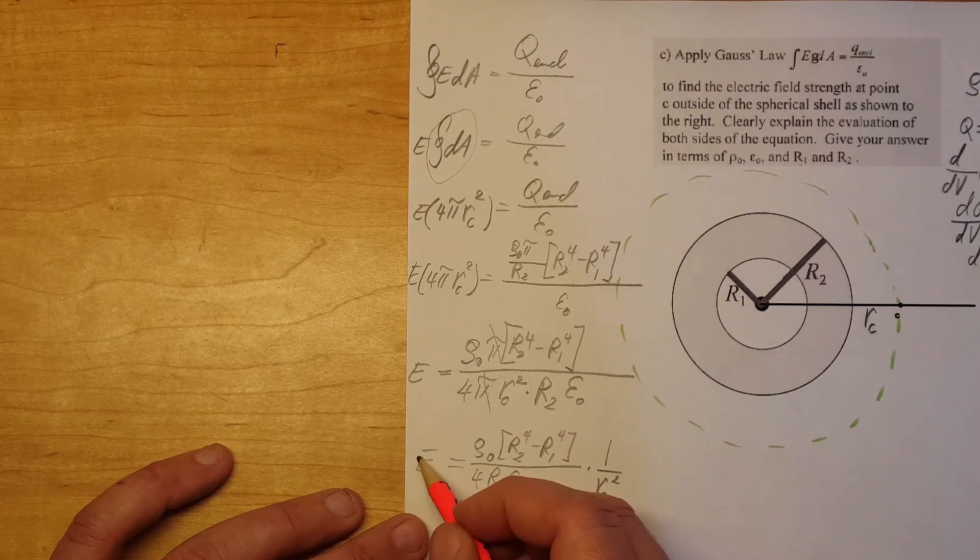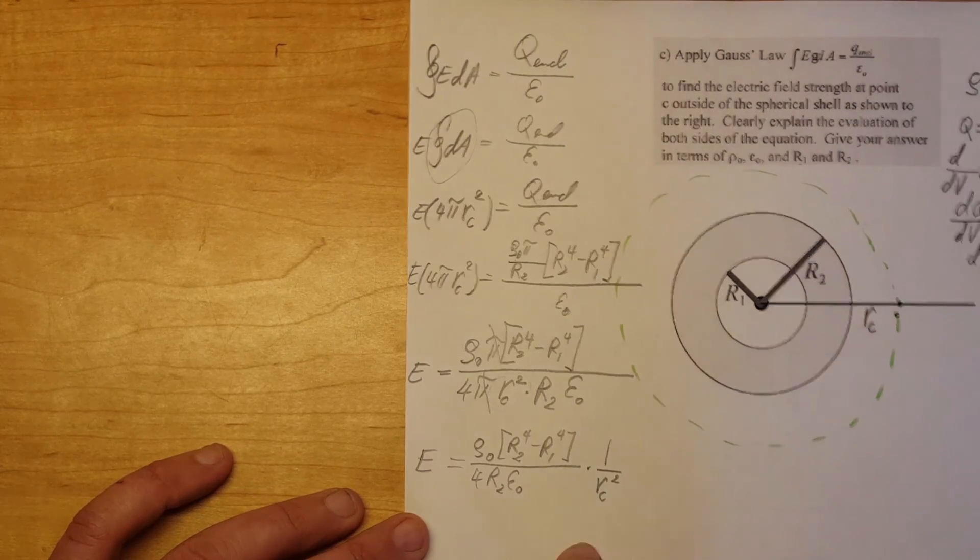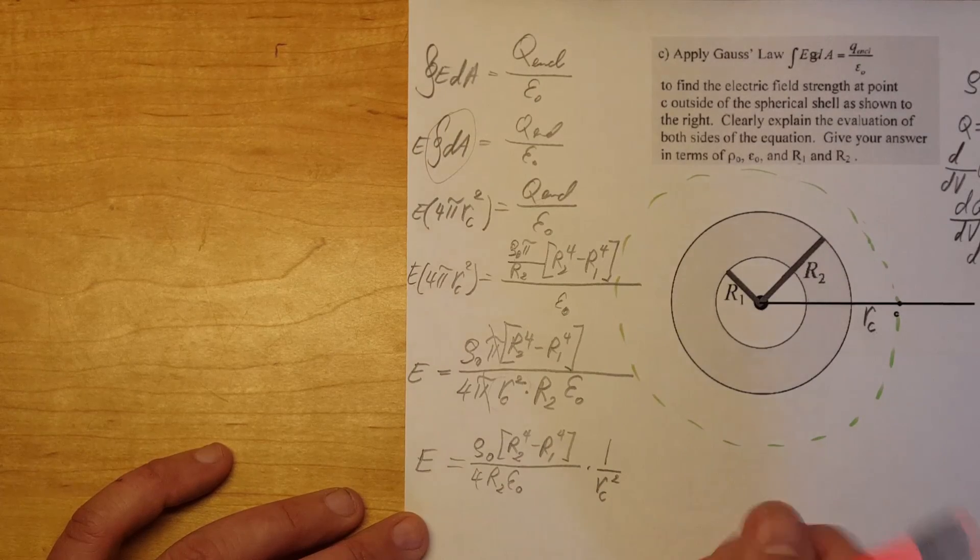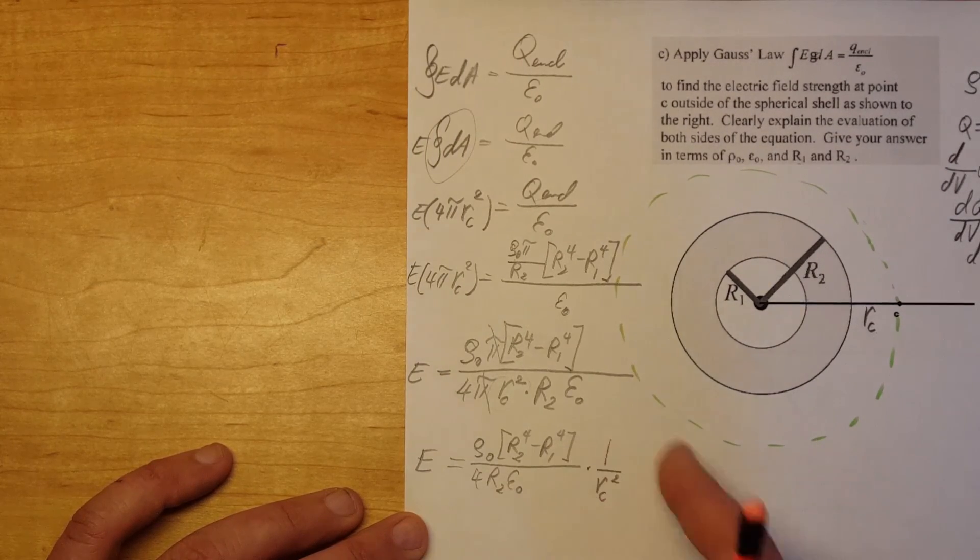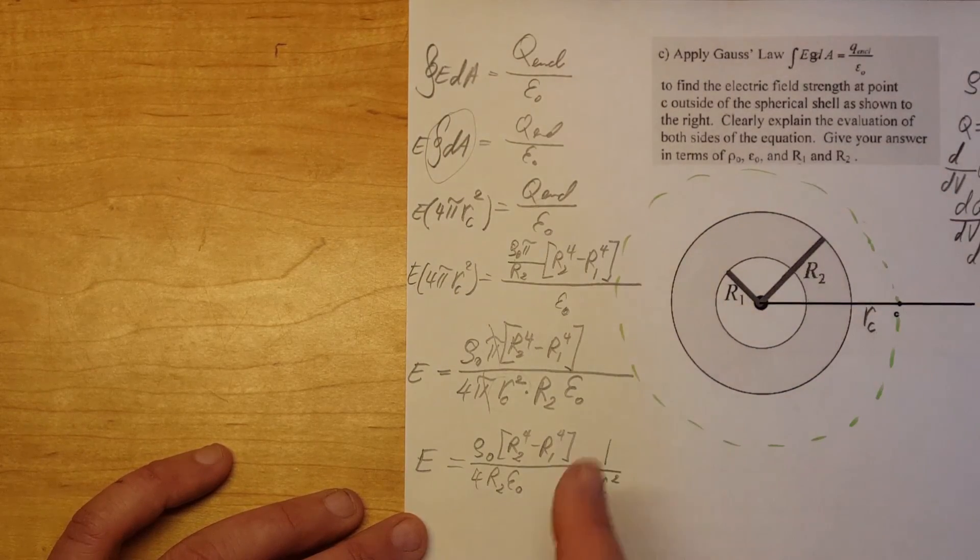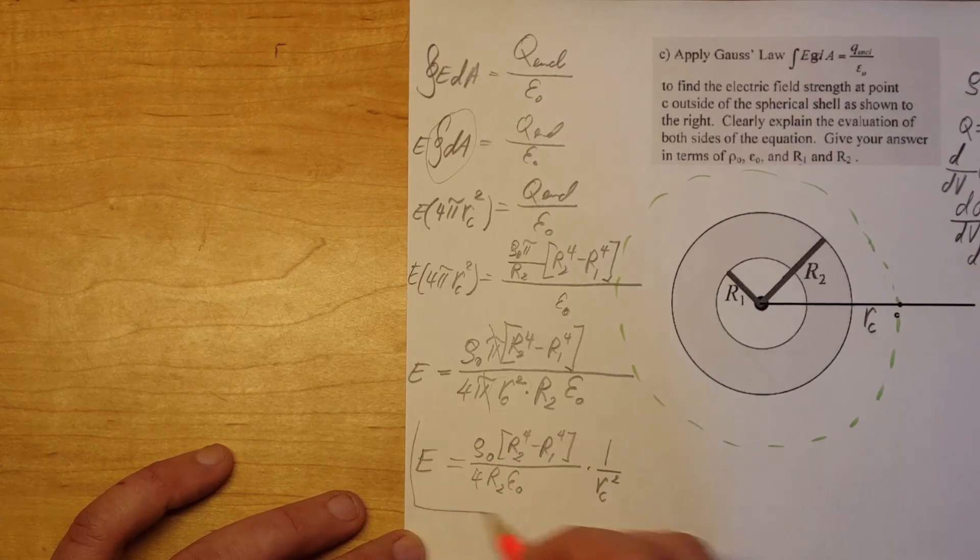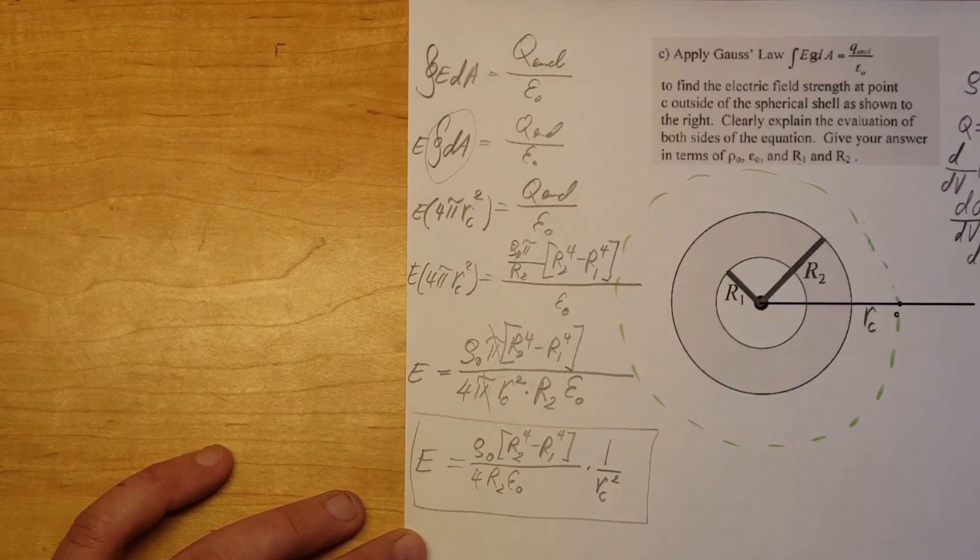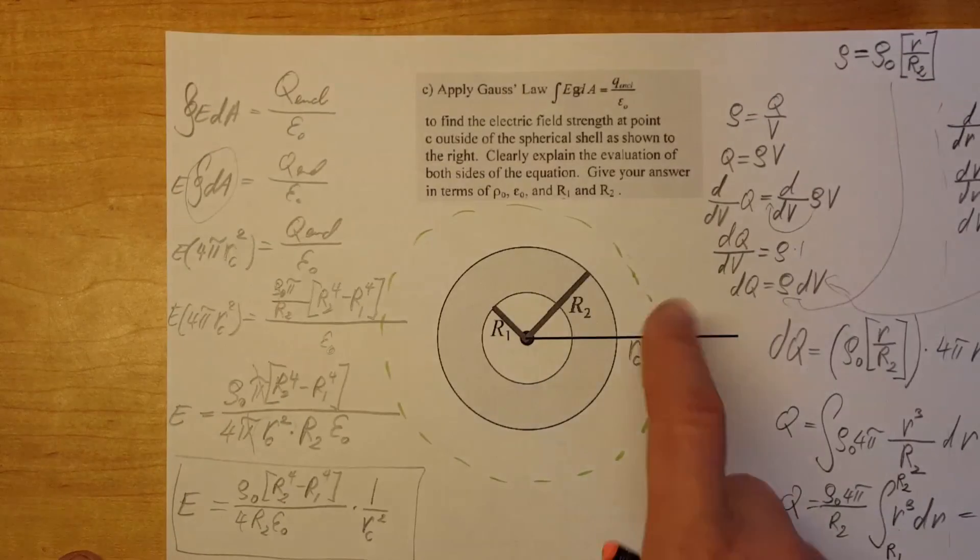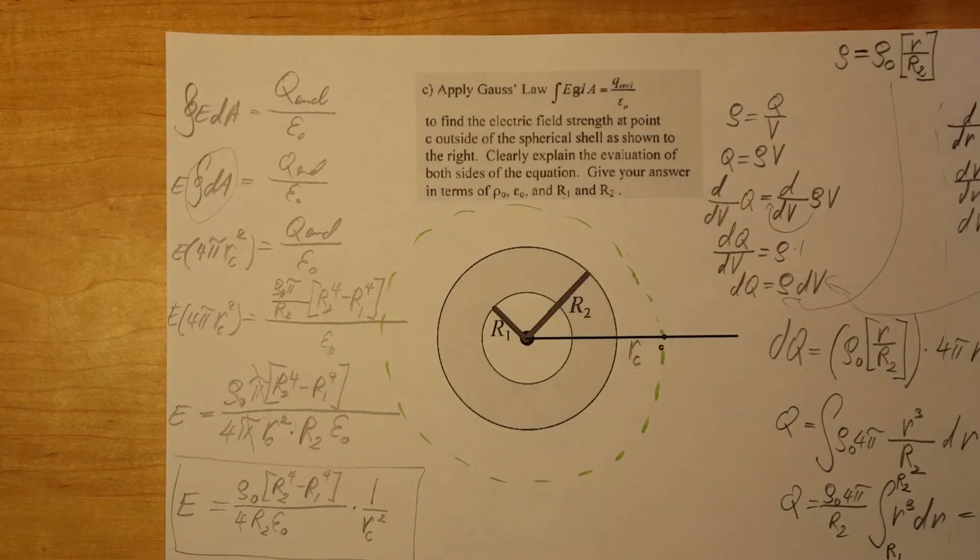In case you want to graph it or have a visual how this would look like, you could see that this is pretty much the same thing as 1 over x squared. So this is our final formula for our E field outside the spherical non-conducting shell. Thank you.